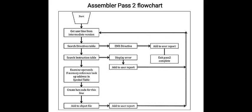If memory reference, lookup addresses in the symbol table. This is done in our Pass 2 of the assembler. Once we get the operands there, then in Pass 2 we will create the hexadecimal code for this line. Finally, we will add to the object file and add to the user report and the same thing will continue from starting again.